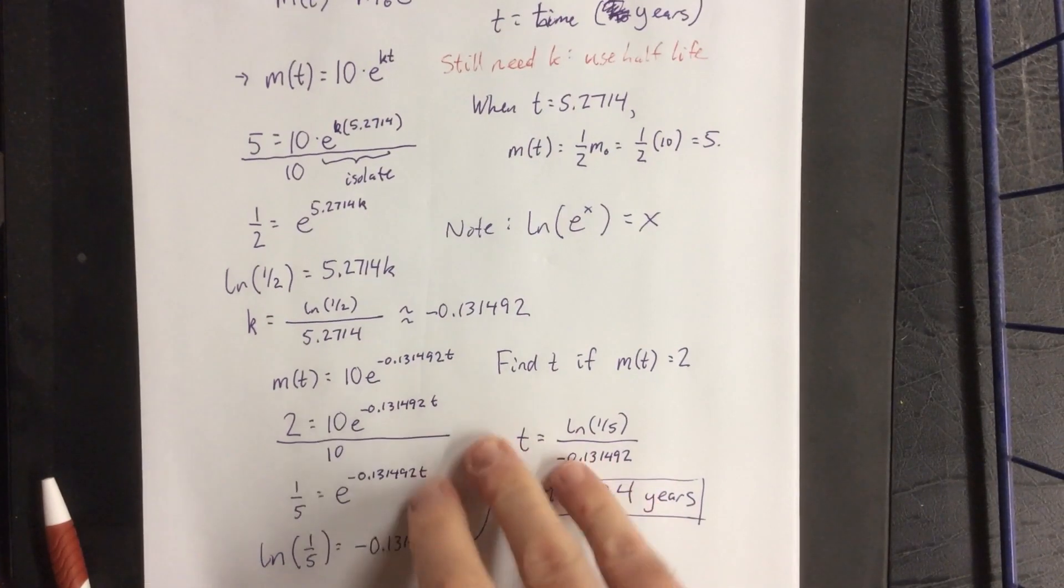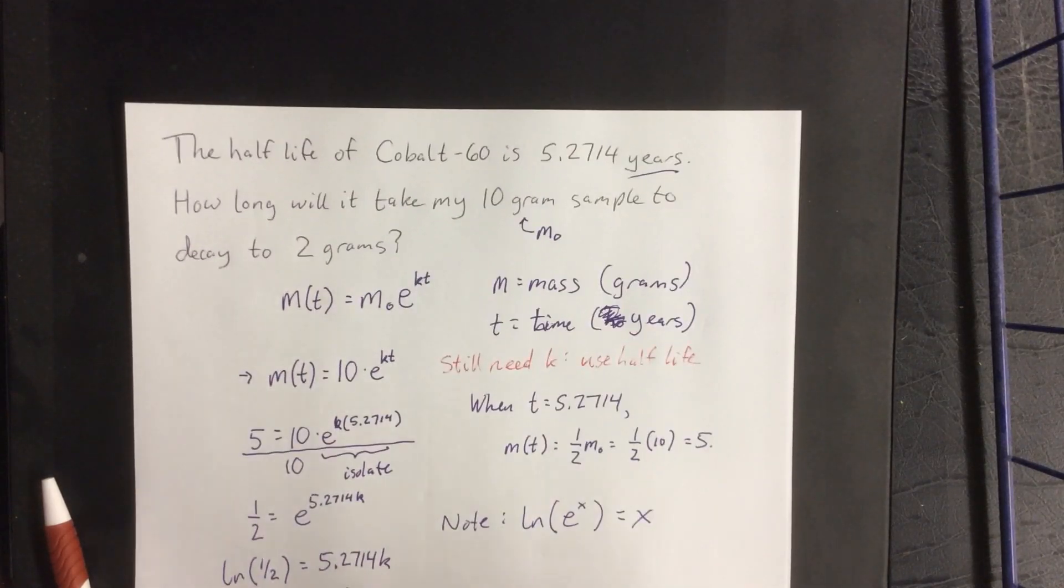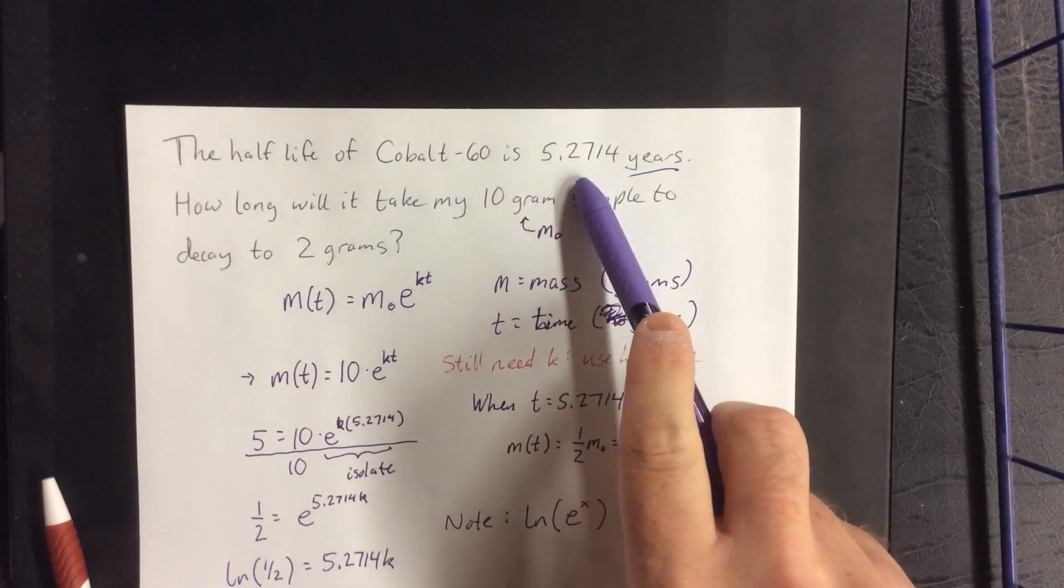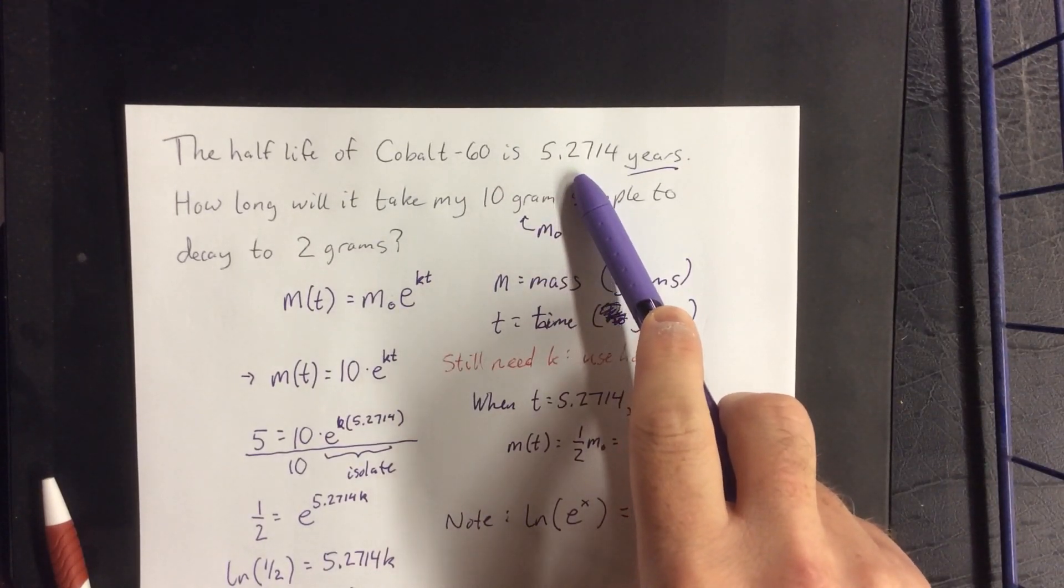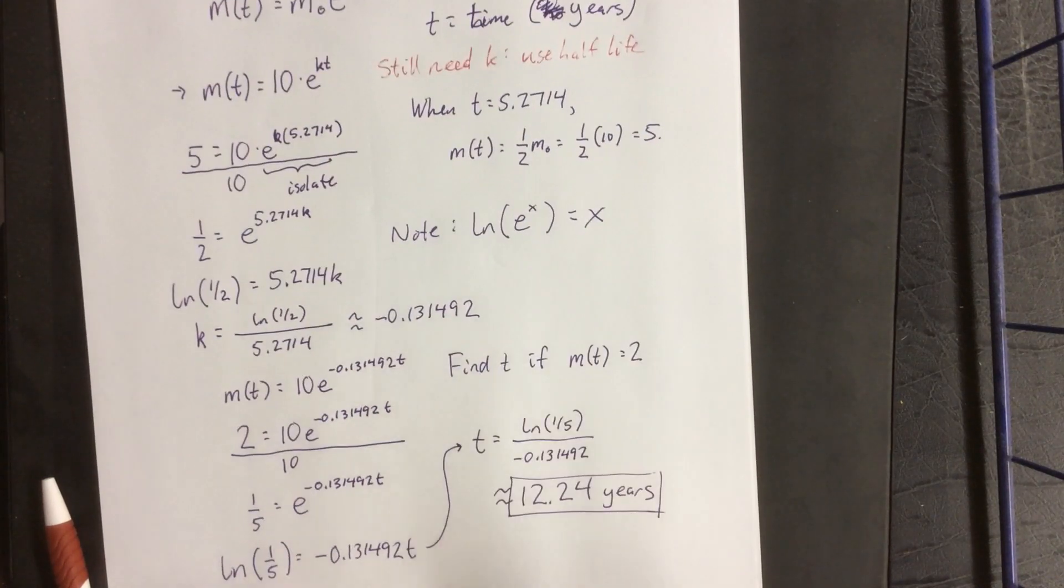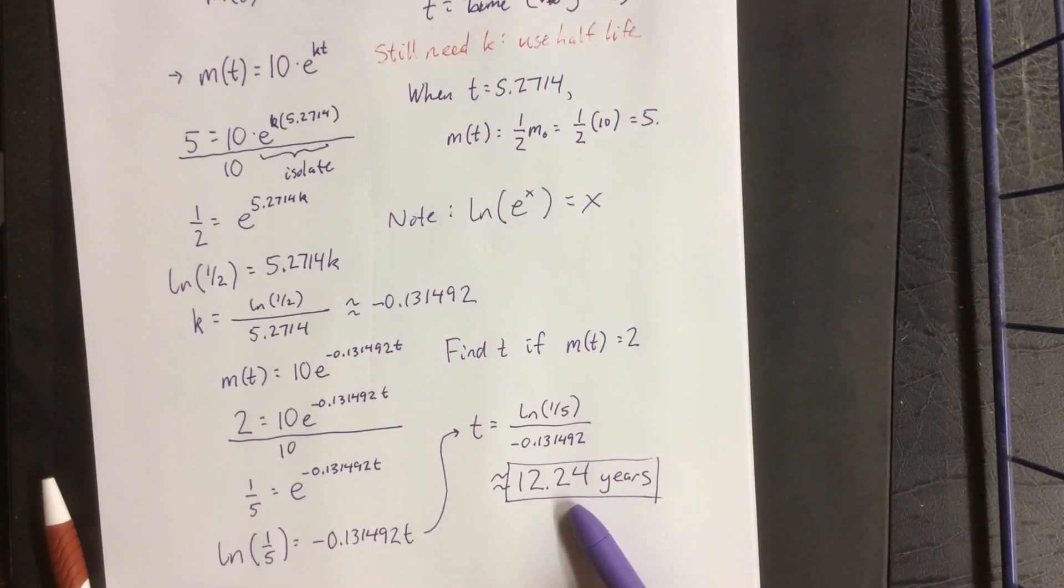Please do keep in mind that 2 grams is slightly less than one quarter of the original, so I would expect at least two half lives to have passed. Two half lives would be about 10.5 years. You'll notice that in order to get something even smaller, we would need to wait for just slightly beyond all of that.